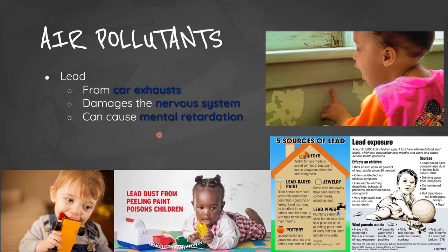Lead is another air pollutant. Sources include car exhaust, toys coated with lead, lead-based paints in older homes, jewelry, and lead pipes in older plumbing systems that can leach into drinking water, as well as some pottery. In the 1900s, scientists found that lead levels in US children's blood rose sharply, leading to interventions such as banning lead in paint, gasoline, and plumbing, which reversed the trend, though many children remain at risk.